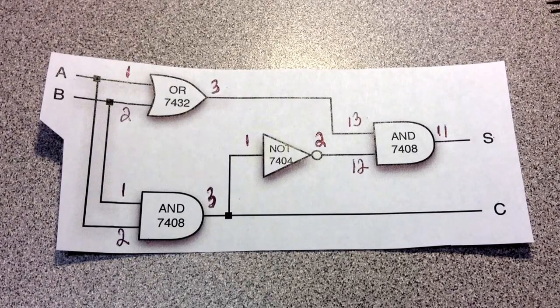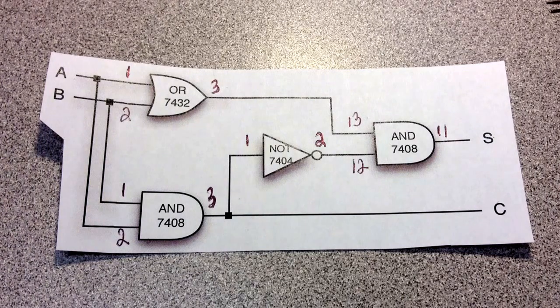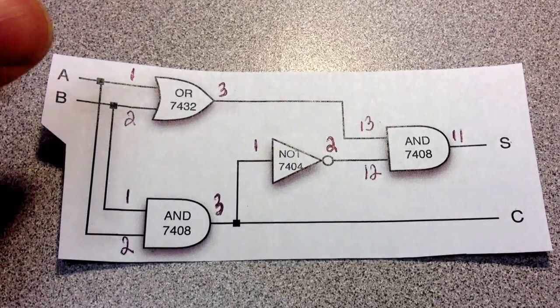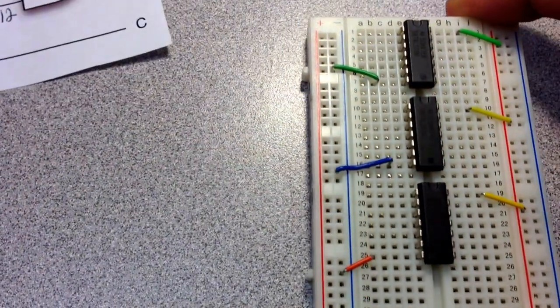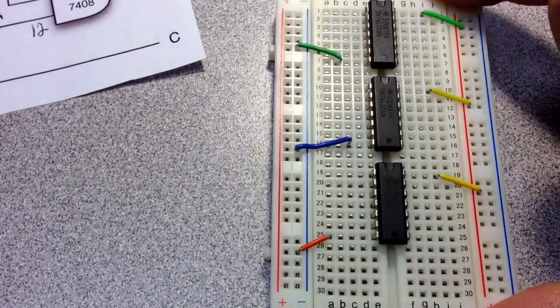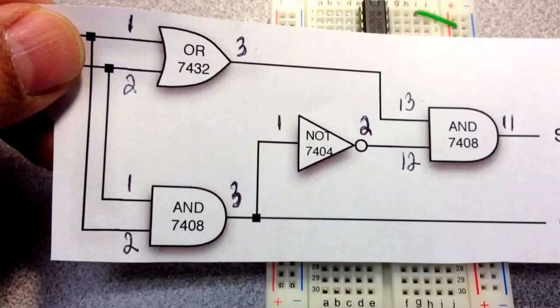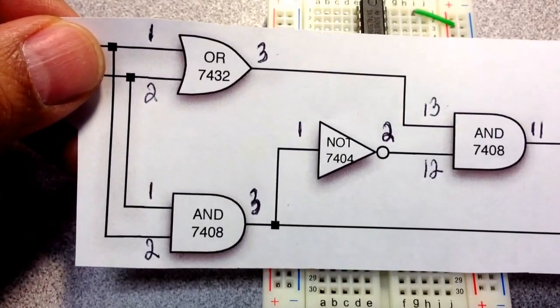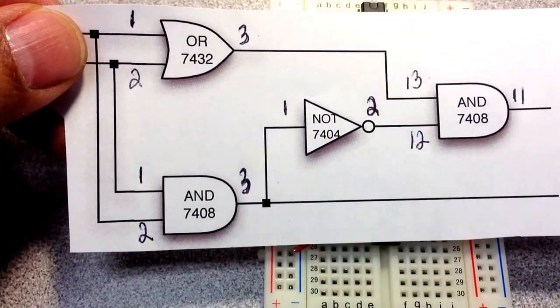All right, so now we're going to look at implementing what we planned out in the first screencast in assignment 2. So we're going to bring back our breadboard now. And again, we're going to follow what we set out to do in terms of what pins go with what.